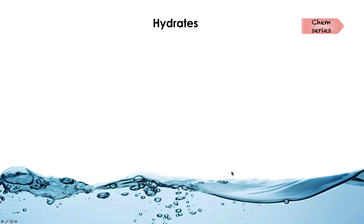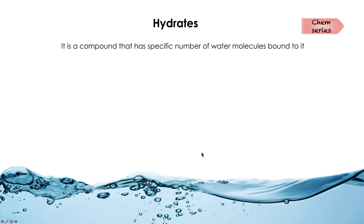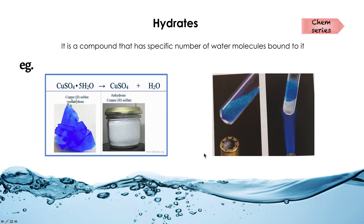Coming to hydrates: a hydrate is a compound that has a specific number of water molecules bound to it. For example, copper sulfate pentahydrate forms blue crystals. On heating, the water is driven off and a white precipitate of anhydrous copper sulfate forms. When this copper sulfate is kept in a moist area, it reabsorbs exactly 5 H₂O molecules and again forms copper sulfate pentahydrate with its blue color. Only 5 molecules of H₂O can combine — no more, no less.